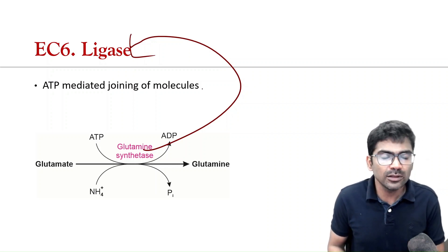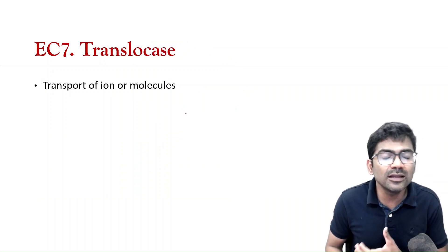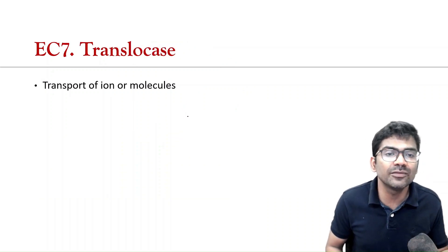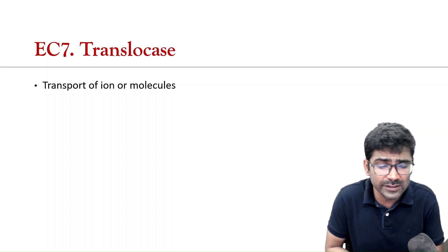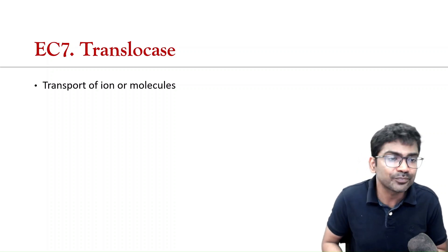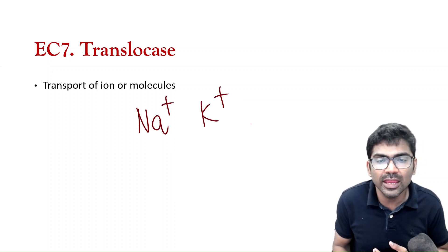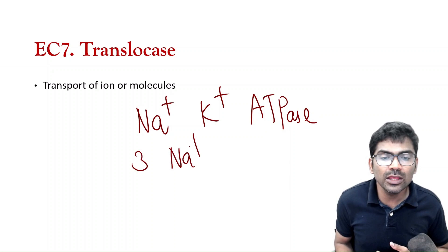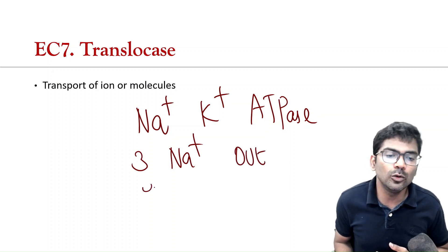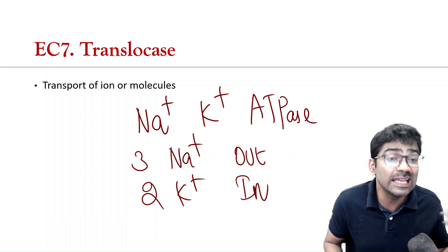In old textbooks, they only mention six classes of enzymes. In new books, you will see that there is seventh class of enzyme that is translocase. So, initially, these ion channels, they were not considered as enzymes, but recently, they started considering ion channels like sodium-potassium ATPase, also as enzyme. So, sodium-potassium ATPase, it pumps three sodium out to potassium in. So, this is also considered as an enzyme.